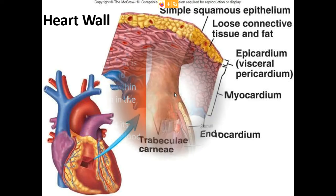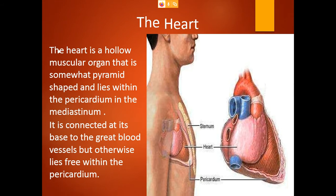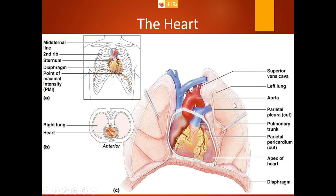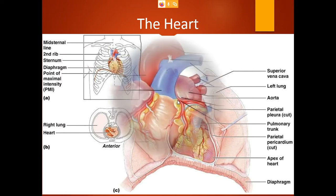The heart is a hollow muscular organ, pyramidal in shape. The layer covering the heart is called the pericardium, which is connected at its base with the great blood vessels but otherwise lies free within the pericardium. Some vessels open into the heart and some emerge outside it. The red-colored vessels are arteries emerging from the heart, whereas the blue-colored ones are veins which open into it.